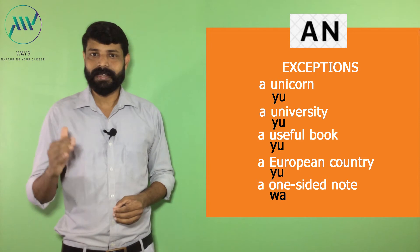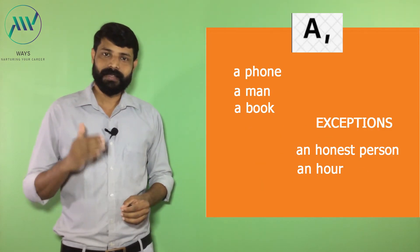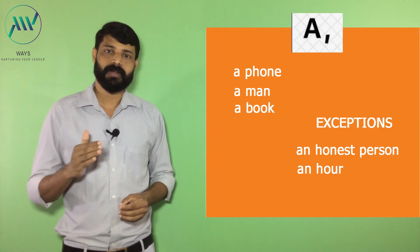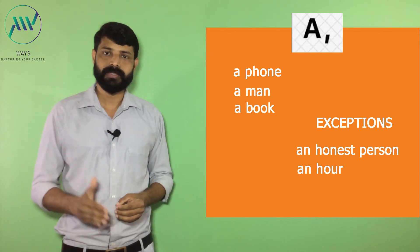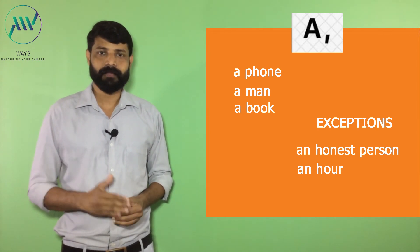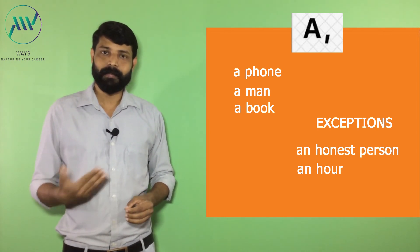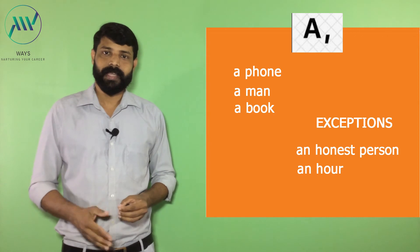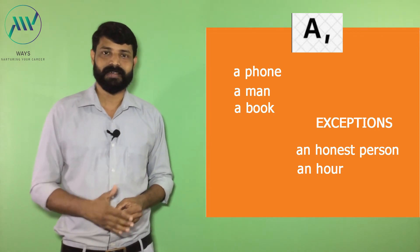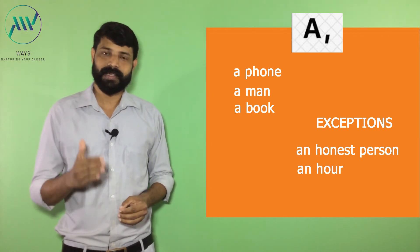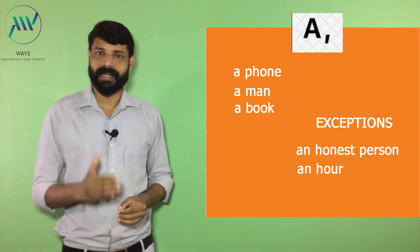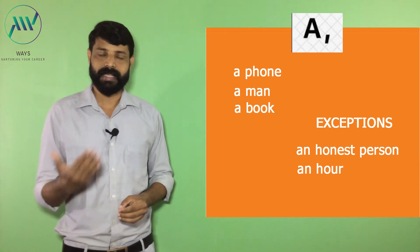When letters start with consonant sounds, we always use article A. For example: a phone, a man, a book. In all these examples the words start with a consonant sound, so we use article A.